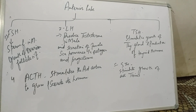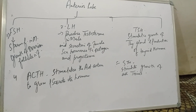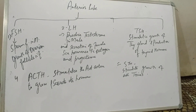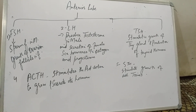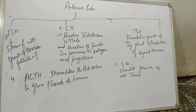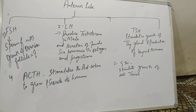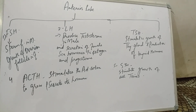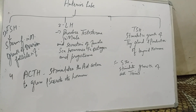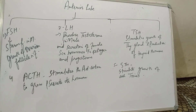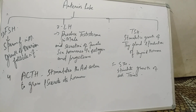TSH (thyroid stimulating hormone) stimulates growth of the thyroid gland and production of thyroid hormones. ACTH (adrenocorticotropic hormone) stimulates the adrenal cortex to grow and produce its hormones. STH (somatotrophic hormone) stimulates the growth of all tissues.